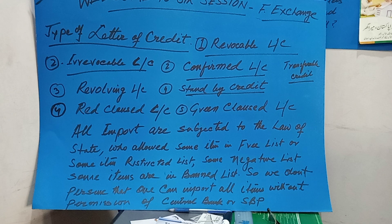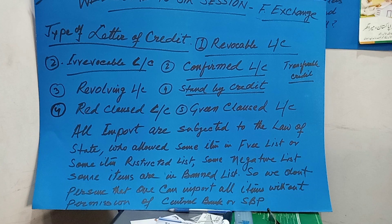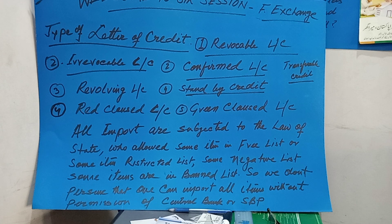All imports are subject to the law of the state and certain rules and regulations imposed by the government of Pakistan. The government allows some items on the free list, some on the restricted list, some on the negative list, and some on the banned list. You cannot import everything — for example, explosives, arms, ammunition, drugs, heroin, and similar items cannot be imported. Permission of the central bank is required for all permissible imports.